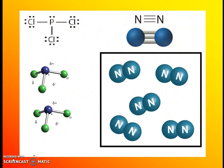PCl3 (phosphorus trichloride) is a polar molecule because of the unequal sharing between phosphorus and chlorine, and it has a positive and negative side due to the asymmetry of the molecule. Nitrogen (N2), on the other hand, has two nitrogens sharing three pairs of electrons equally, so there are only dispersion forces between them — not a very strong attraction, but still some attraction holding those nitrogen molecules together.